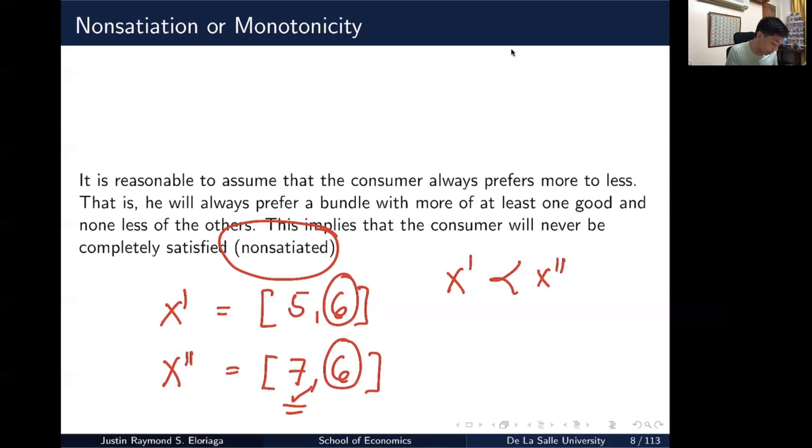So that's this assumption of non-satiation. You always prefer a bundle with a higher amount of one good, none less the other. The consumer will not be completely satisfied. So say I had a third bundle and this was say 10 and this is 6, then of course I would prefer that over the second bundle. So that is our assumption on non-satiation or monotonicity.